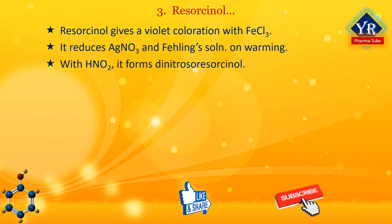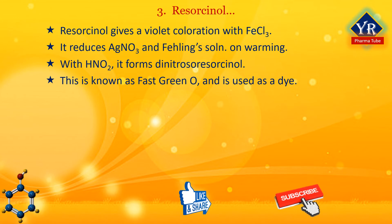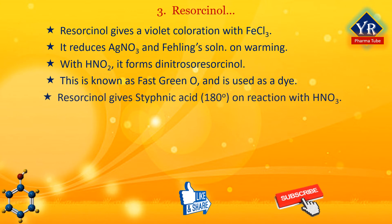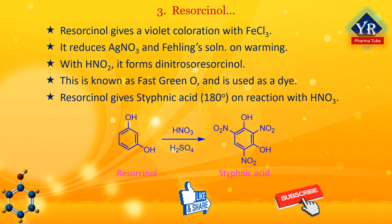With nitrous acid, resorcinol forms dinitrosoresorcinol, known as fast green O, which is used as a dye. When nitrated, resorcinol forms styphnic acid, i.e. 2,4,6-trinitroresorcinol. Styphnates are used to identify certain compounds by molecular complex formation, i.e. picrates. A number of reactions of resorcinol are best explained on the assumption that resorcinol behaves as a tautomeric substance.